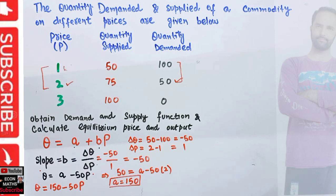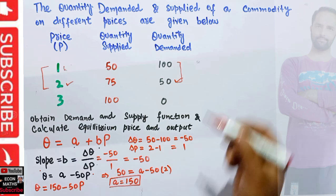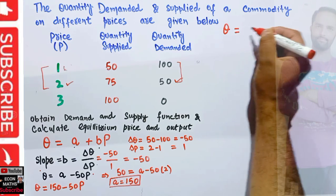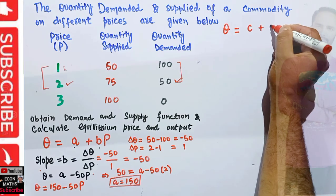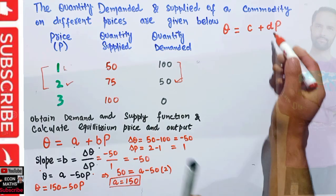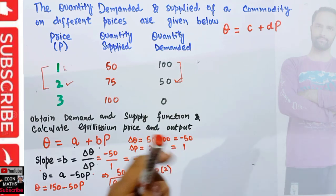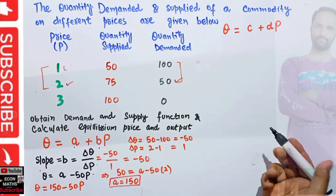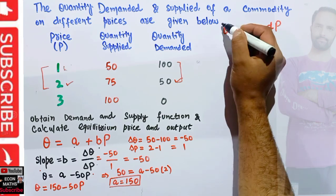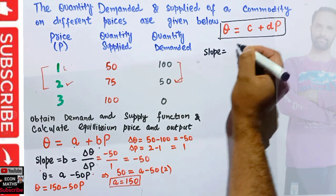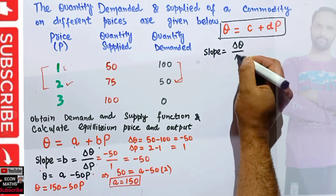Now to find the supply function. The general form of the supply function is denoted as C plus DP, where C is the quantity intercept and D is the slope — or the inverse of slope since we take quantity on the horizontal axis. Slope is simply equal to change in quantity supplied upon change in price.